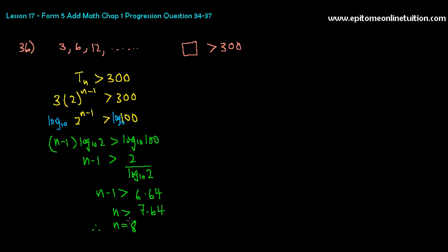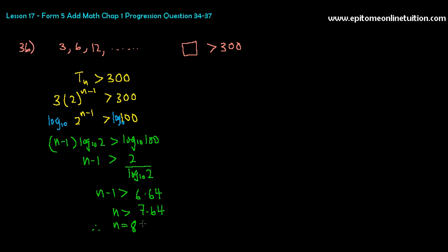So the first term in this GP that exceeds 300 would be the eighth term. You don't know the value yet, but the eighth term will be more than 300 — it could be 301, 302. Sometimes they will ask you to find the value of the term that exceeds 300, then you go and do T8. In this case, the question did not ask for it, so that is fine.